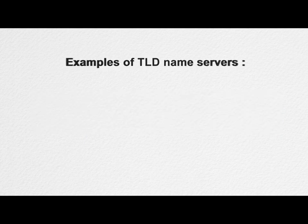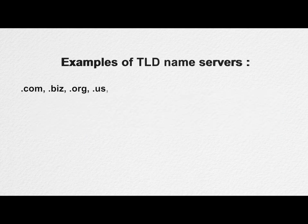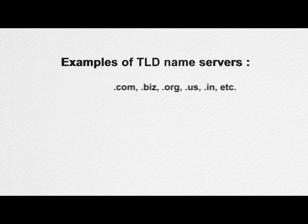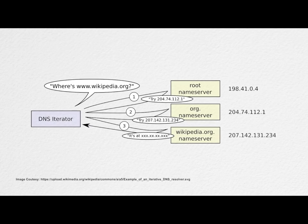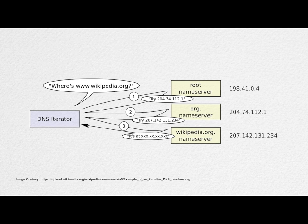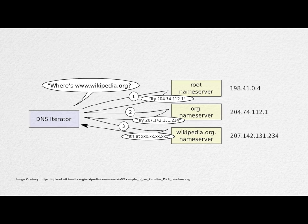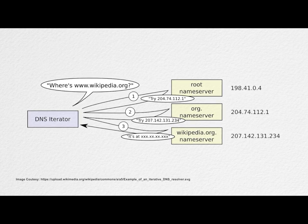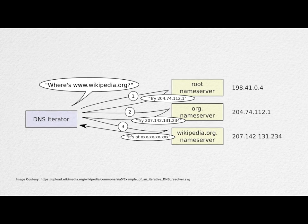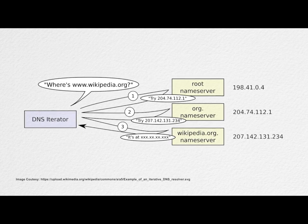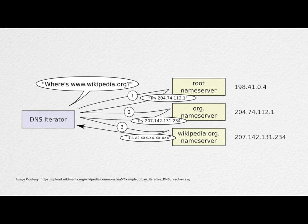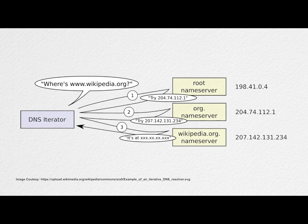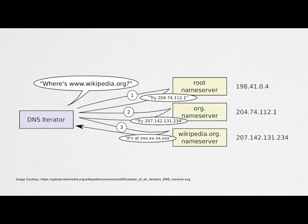Some examples of TLD name servers are .com, .biz, .org, .us, etc. These TLD name servers act as a switchboard and direct the query to the appropriate authoritative name server maintained by each domain. The authoritative name server maintains DNS records along with other useful information. This address record is returned back to the requesting host computer via the name server and ISP DNS server.